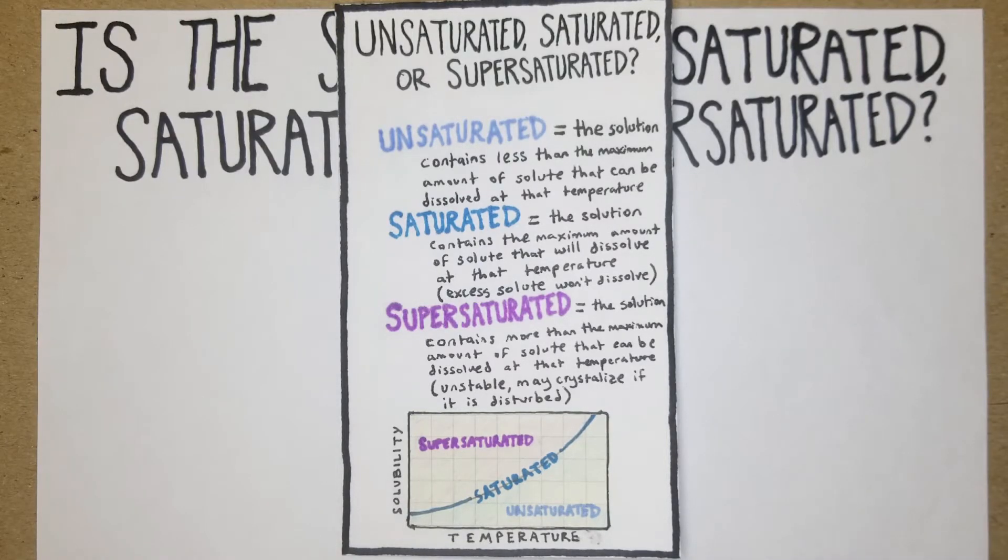Supersaturated solutions are pretty interesting. They contain more than the maximum amount of solute that can be dissolved at that temperature. Usually how that occurs is the temperature was raised, a greater amount of solute was able to dissolve, and then the temperature was lowered again. It's still dissolved but it's unstable now and it might crystallize if it's disturbed.